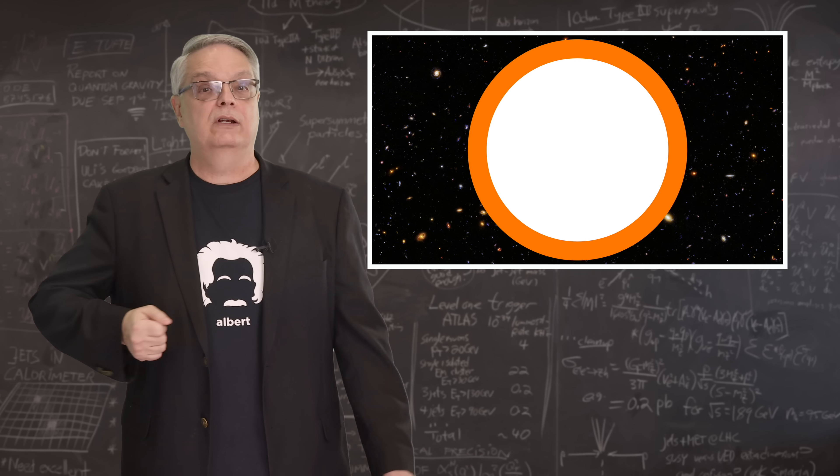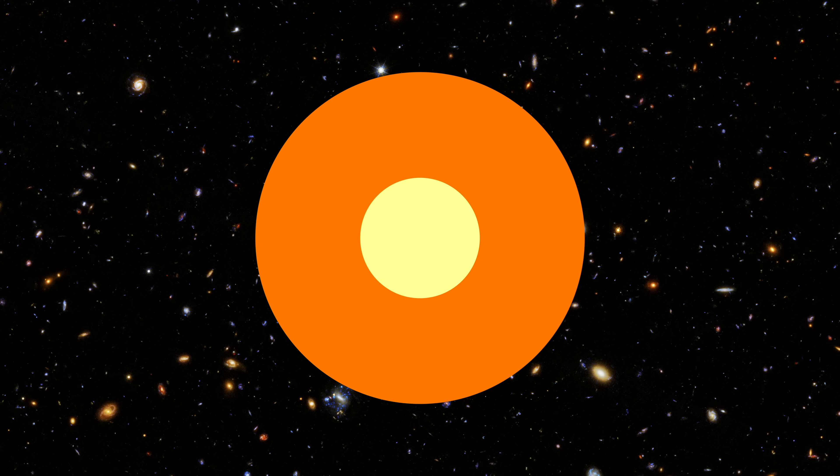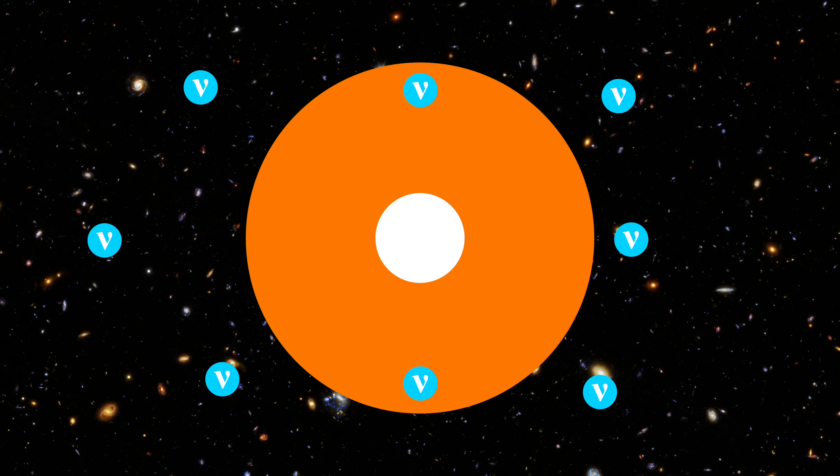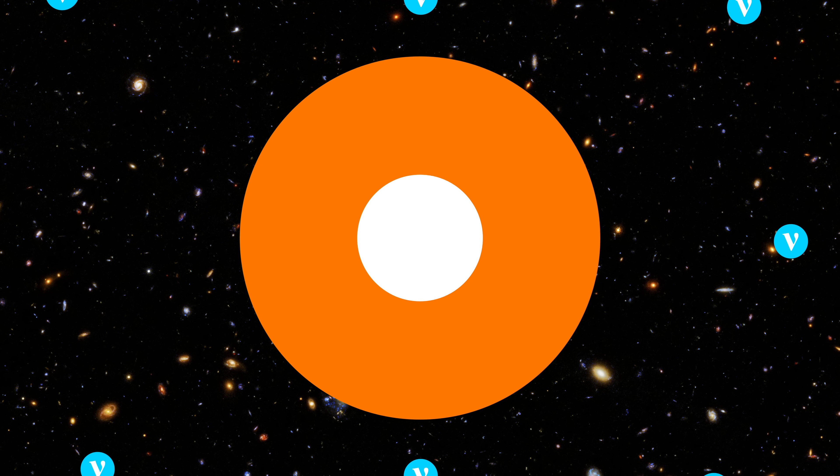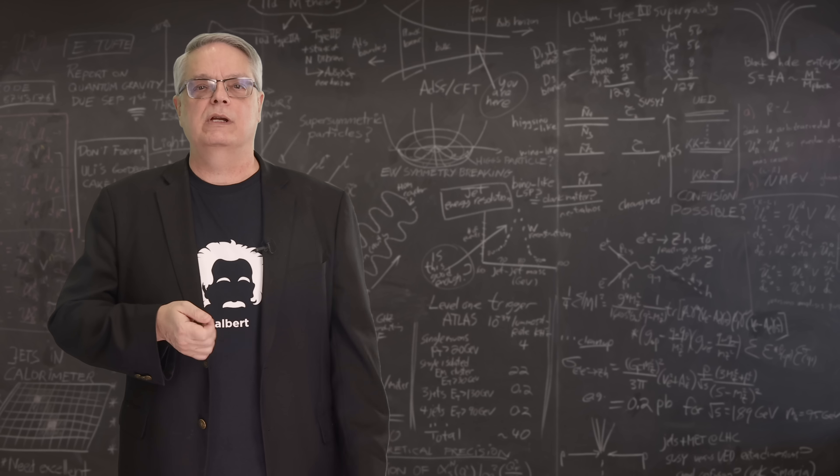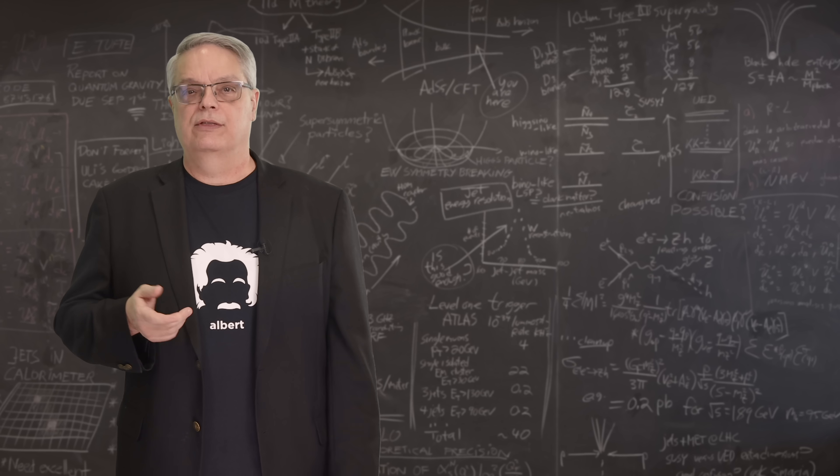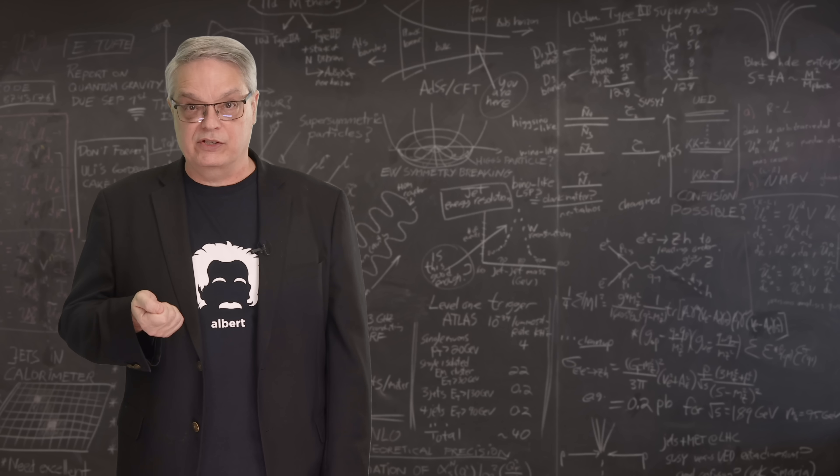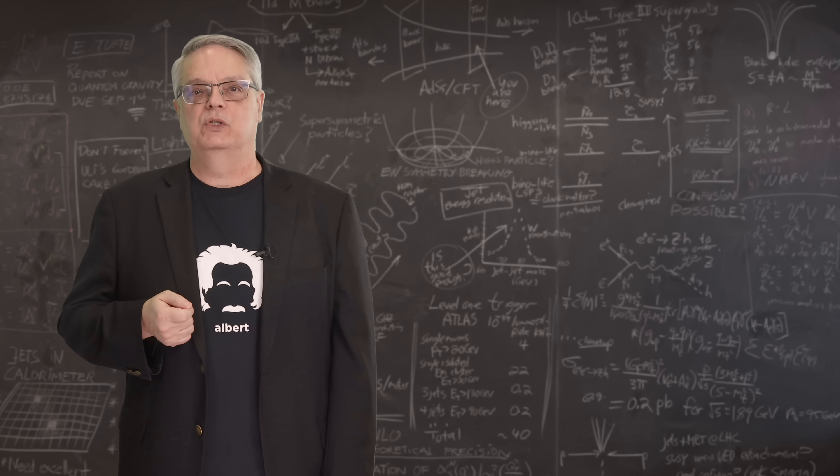On the other hand, neutrinos don't interact much, thus they leave the supernova pretty much unaffected by the expansion process of the explosion. It's not fundamentally different from how it works in our sun, in which the neutrinos created in nuclear processes at the center of the sun get to the earth in about eight minutes, while the photons take thousands of years to make it to the surface of the sun before they zip to earth.